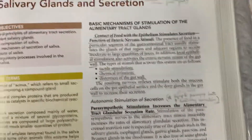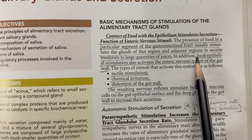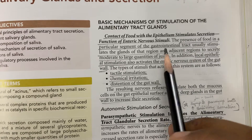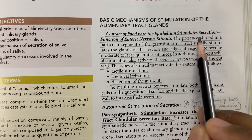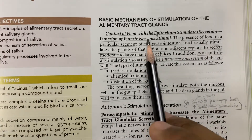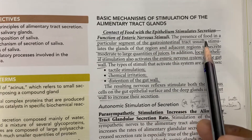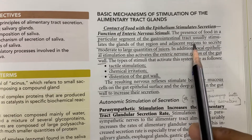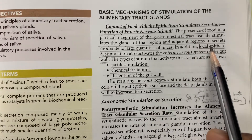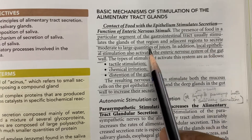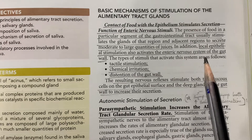Coming to the basic mechanisms of stimulation of the alimentary tract glands: contact of food with the epithelium stimulates secretion — this is a function of the enteric nervous stimuli. The presence of food in a particular segment of the GIT usually stimulates the glands of that region and adjacent regions to secrete moderate to large quantities of juices.